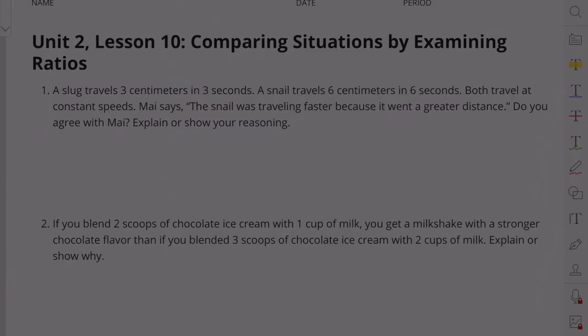A slug travels 3 centimeters in 3 seconds. A snail travels 6 centimeters in 6 seconds. Both travel at constant speeds. Mai says the snail was traveling faster because it went a greater distance. Do you agree with Mai? Explain or show your reasoning.